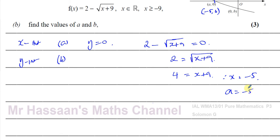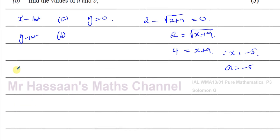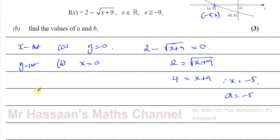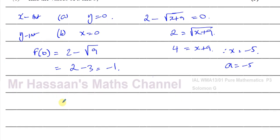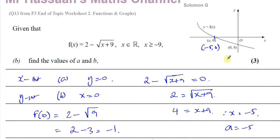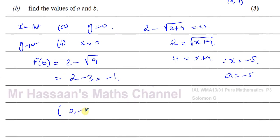For b, the y-intercept is when x equals 0. Substituting: f(0) equals 2 minus the square root of 9, which equals 2 minus 3, which is negative 1. So the y-intercept is (0, −1), and therefore b equals negative 1.